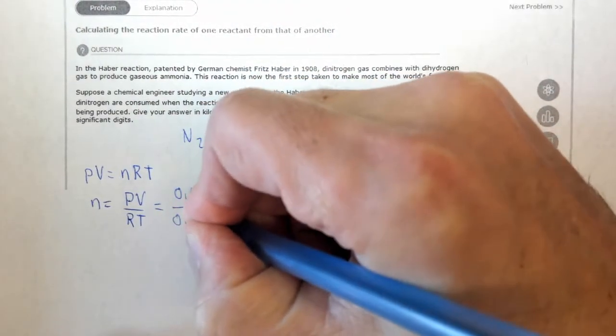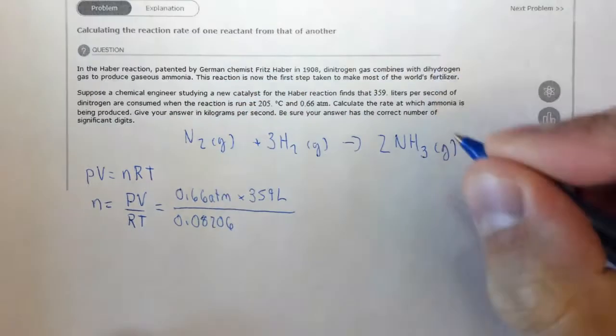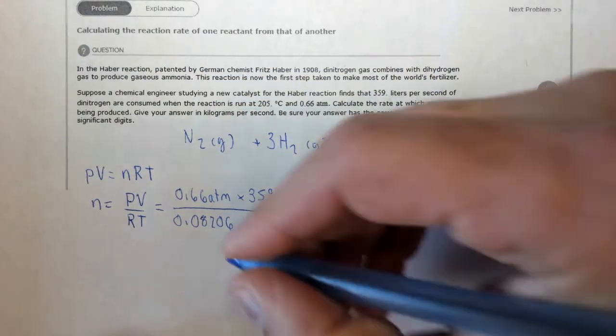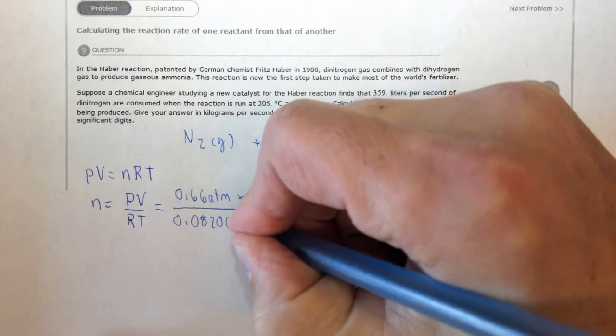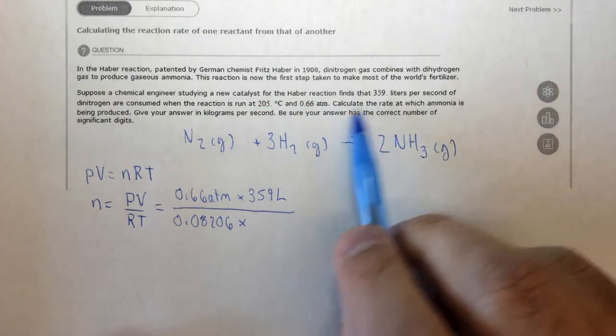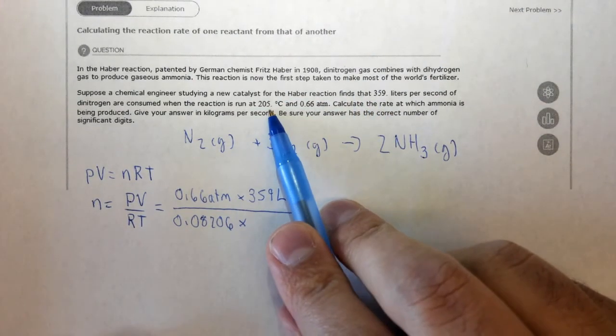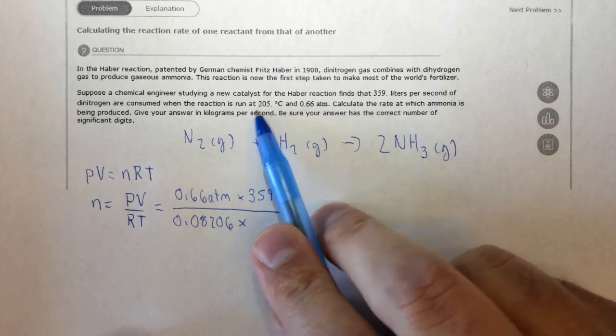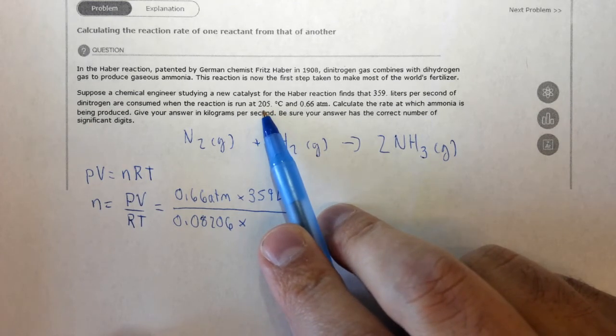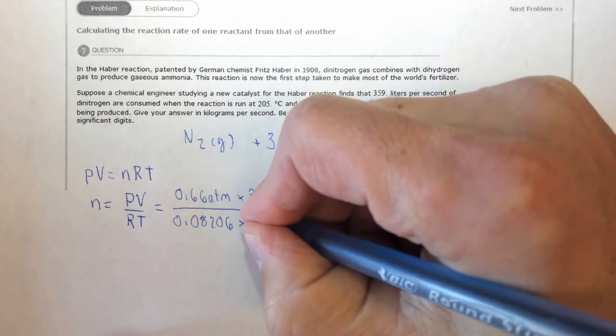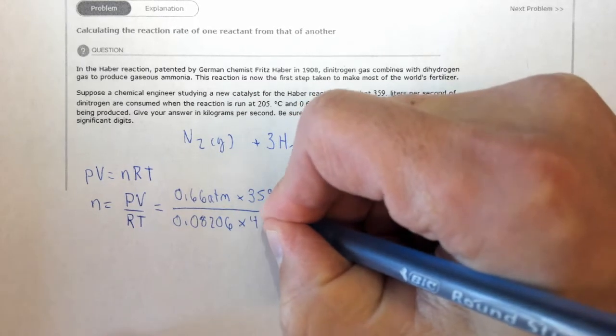R is a constant, 0.08206, that's liter atmospheres per mole Kelvin, times the temperature. Remember that for the ideal gas law, the temperature has to be in Kelvin. So you take your 205 degrees C and you add to it 273 and you get 478 Kelvin.